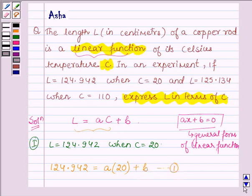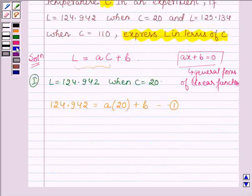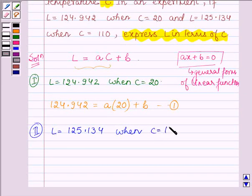The second case is L equals 125.134 when C equals 110. Therefore we have 125.134 equals A times 110 plus B. So this is equation number 2.